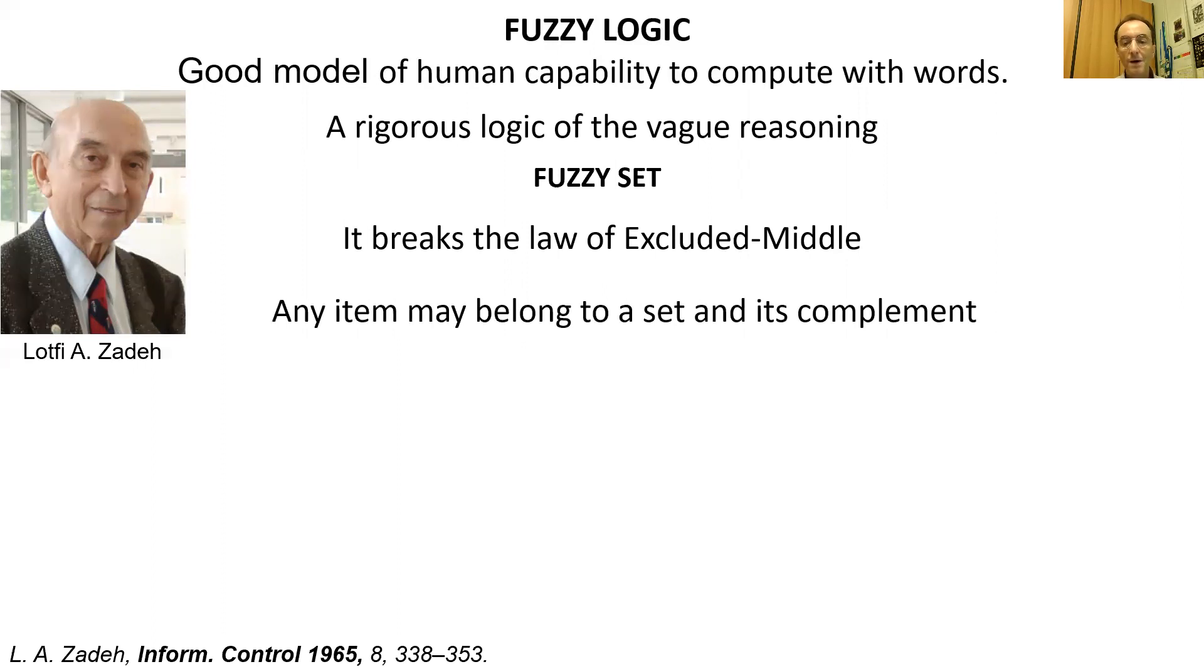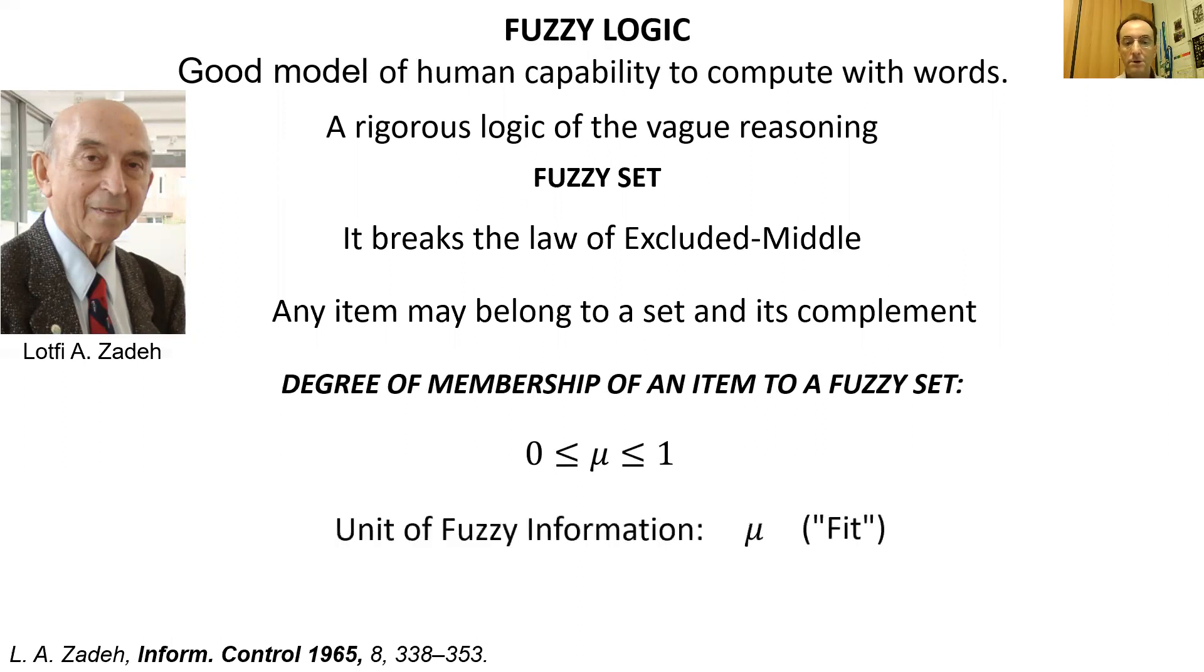An element may belong to any set with the same or different degrees of membership. The degree of membership of an element to a fuzzy set can be any real number included between 0 and 1. The degree of membership is the unit of fuzzy information called fit. It derives that fuzzy logic is an infinite value logic.